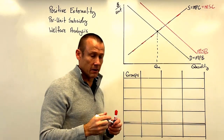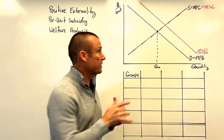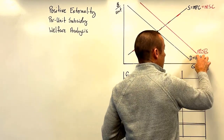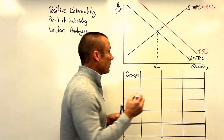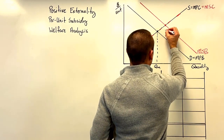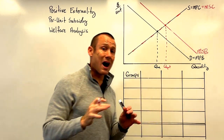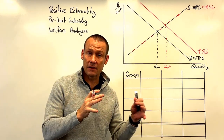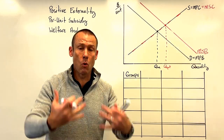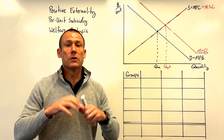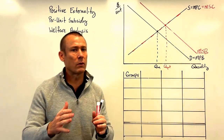The market left alone gives us Q-market. But the optimal quantity to be produced is always where the MSC and MSB curves intersect — that gives us Q-opt. We are not allocatively efficient; we are allocatively inefficient. We're not allocating the right amount of resources to production. We actually need to allocate more resources to production of this good to reach our optimum level.